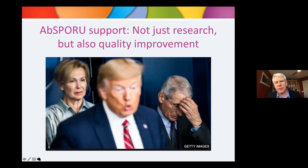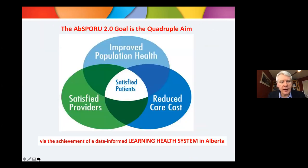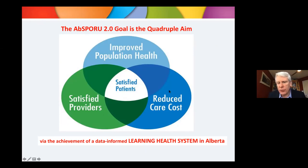ABSPORU isn't just for research — it's also for quality improvement. The goal is about the quadruple aim in healthcare: improving patient care, improving population health, improving the satisfaction of patients and providers, and reducing the cost of care. That dovetails exactly with what Alberta Health Services and Alberta Health want to do.